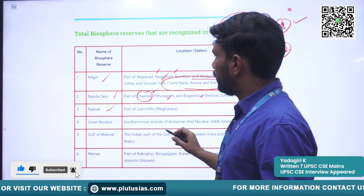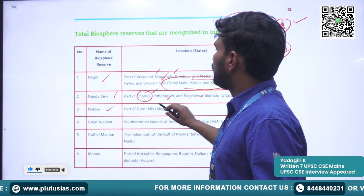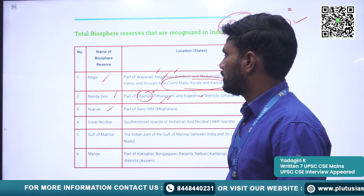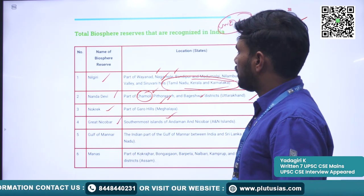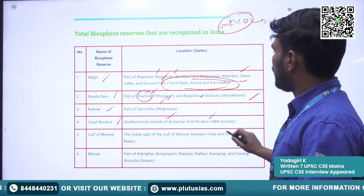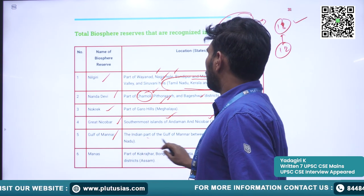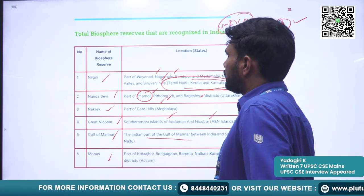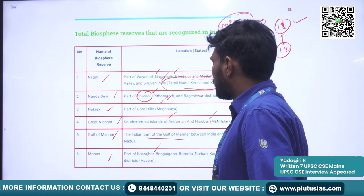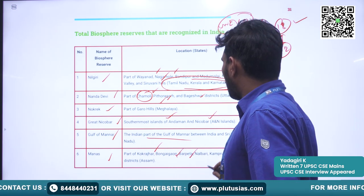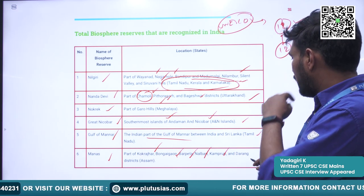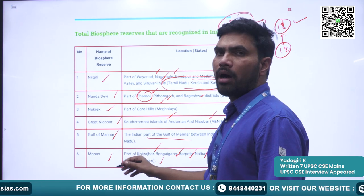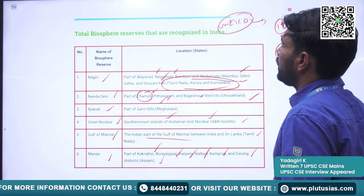Next is Nokrek — parts of Garo Hills designated as the Nokrek Biosphere Reserve. Next is Great Nicobar, situated in the southernmost islands of Andaman and Nicobar. Next is Gulf of Mannar — the India part of the Gulf between India and Sri Lanka. Next is Manas Biosphere Reserve — parts of Kokrajhar, Bongaigaon, Barpeta, Nalbari, Kamrup, and Darrang districts of Assam.